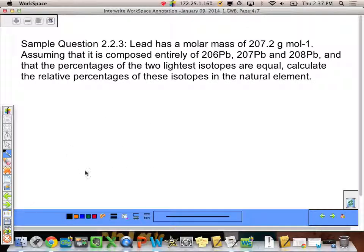The next problem, 2.2.3, says that lead has a molar mass of 207.2 grams per mole. Assuming that it is composed entirely of 206Pb, 207Pb, and 208Pb, so this is one isotope of lead. This is one that has a mass of 206. I have one that has a mass of 207 and another that has a mass of 208. So those are my three isotopes of lead. And that the percentage of the two lightest isotopes are equal. So I know that the relative abundance of 206 and 207 are going to be the same.